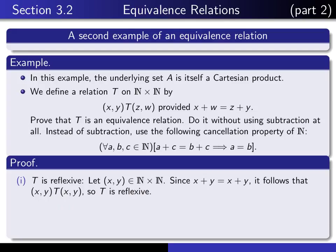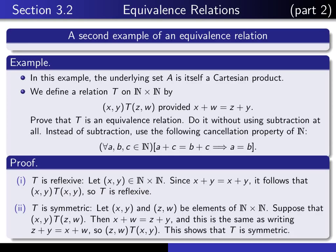The next step is to prove that T is symmetric. Here's my proof: I begin by giving myself two elements of the underlying set A, and I assume that the first one is related to the second one. I have to deduce that the second one is related to the first one. Let (x,y) and (z,w) be elements of ℕ × ℕ. Suppose that (x,y)T(z,w). What does that mean? It means x + w = z + y.